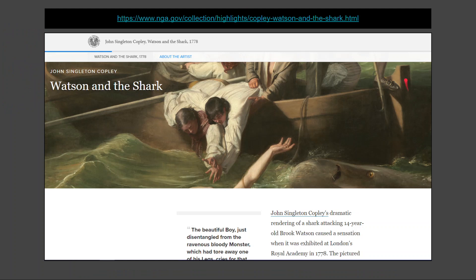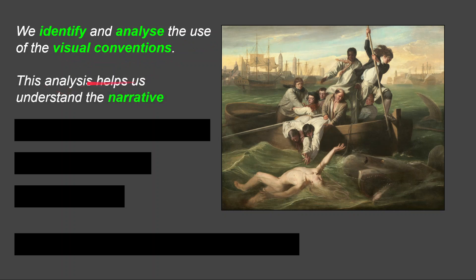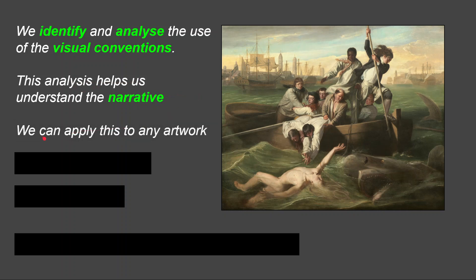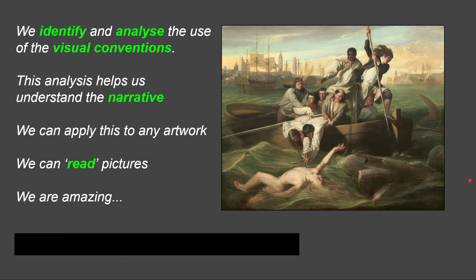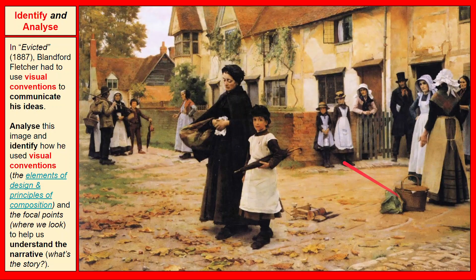If you want more information, click the link in the shared presentation. To summarize: we identify and analyze the use of visual conventions — that's visual literacy, the language of art, how we read pictures. This analysis helps us understand the narrative, the story, and we can apply this to any artwork. Now you need to prove you can do this on your own. In your folio you'll find a slide for 'Evicted,' painted in 1887 by Blandford Fletcher — apply the same approach and answer the same questions. You'll be surprised how much information you can find without any research at all.